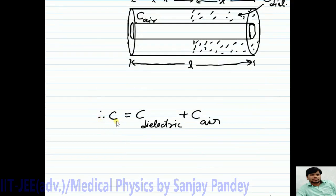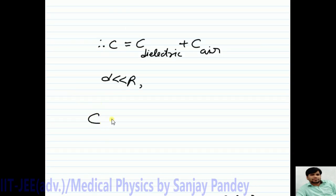Therefore, the net capacitance is C equals C-dielectric plus C-air. Now, it is given that D is very very less than R. Therefore, the capacitance can be calculated by formula of parallel plate capacitor. So, we can write C equals epsilon naught K A of dielectric portion upon D plus epsilon naught A of air portion upon D.